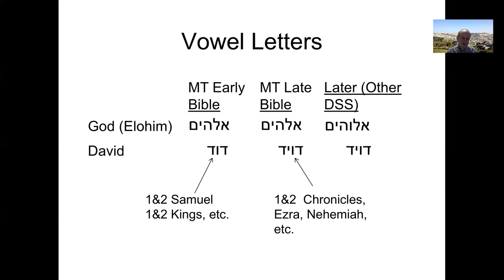That's an example of how sometimes you can distinguish between the earlier books in the Bible from the later books in the Bible, because the trend throughout history was: initially Hebrew was written with no vowel letters, and then as time went on they began to add them, to where finally in the latest instance of Hebrew, they have vowel letters every time they possibly can.